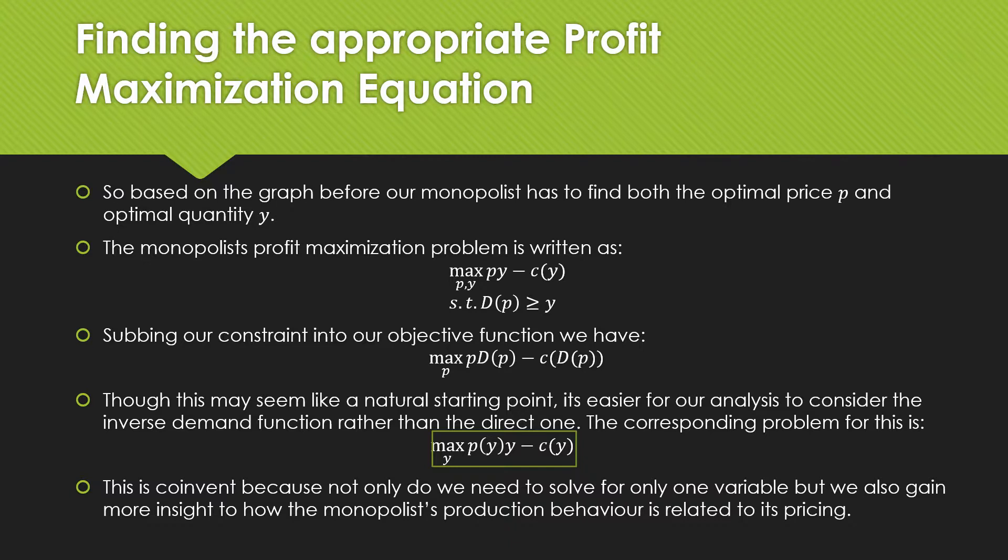So this is a completely different statement at the bottom, this constraint, meaning that the firm cannot produce more than what is being demanded because that's just inefficient. Subbing this constraint into our objective function, we have the following where our firm now only has to choose one variable—has to choose price.